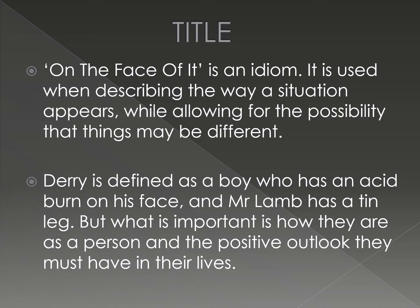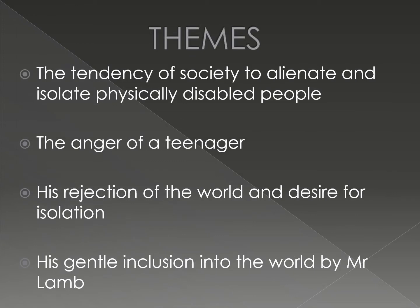Both of them have been isolated due to their physical imperfections, but what is important is how they are as a person and the positive outlook they must have in their lives. This play emphasizes on the fact that what we think of ourselves and how we improve our perception is more important than an outsider's judgment. The most important theme of this chapter is the tendency of society to alienate and isolate physically disabled people. Related themes include the anger of a teenager when his face is marked by severe burn marks, resulting in rejection of the world including his family and most importantly his mother.